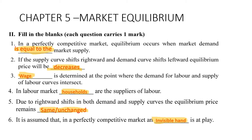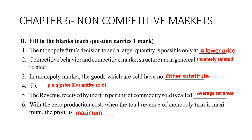Moving to chapter six: non-competitive markets. First: the monopoly firm's decision to sell a larger quantity is possible only at a lower price. Second: competitive behavior and competitive market structure are in general inversely related.